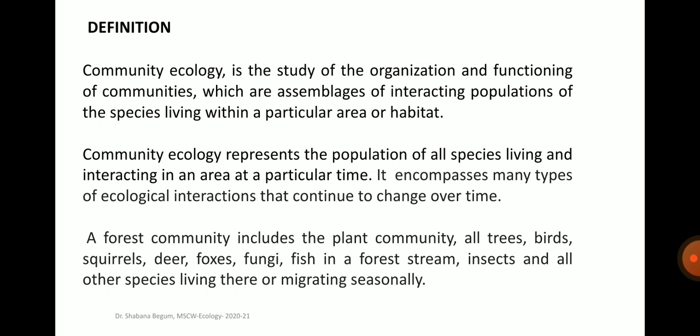It represents the population of all species living within a particular area and encompasses many types of ecological interactions that continue to change over time. For example, a forest community includes the plant community, all the trees, birds, squirrels, deers, foxes, fungi, fishes in a forest stream, insects and all other species living there or migrating seasonally.